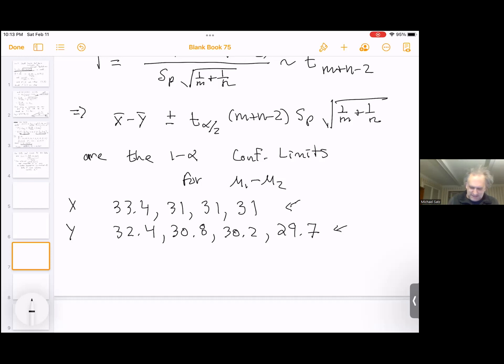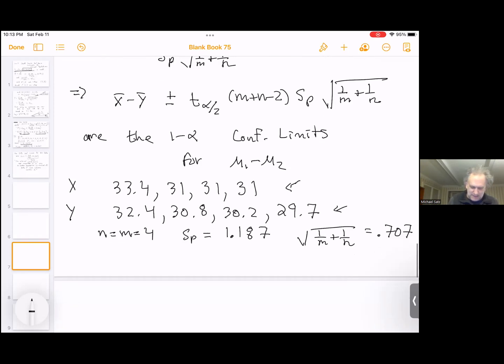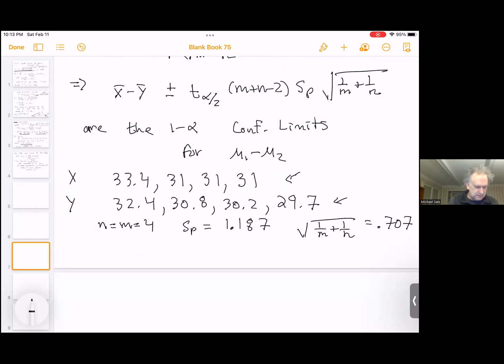So with these eight numbers, then we have n equals m equals 4. They don't have to be equal. And I did this on my computer, sp is equal to 1.187. So this also gives me the square root of 1 fourth plus 1 fourth is 1 half. So we know that this is 0.707.